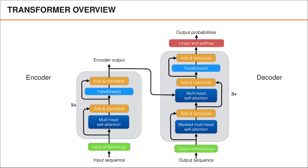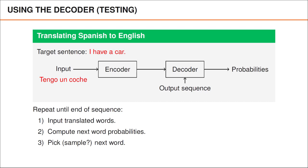In this video, we will focus on how the transformer is used during testing and training, since this will enable us to understand the ideas behind the masked self-attention layers. Let us first look at how the decoder can be used for translation during testing. That is, suppose that we have already trained the decoder and now want to use it for translation. As an example, imagine that we've been asked to translate the sentence 'Tengo un coche' from Spanish to English.